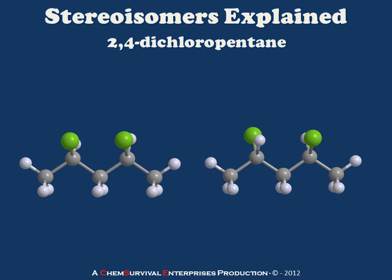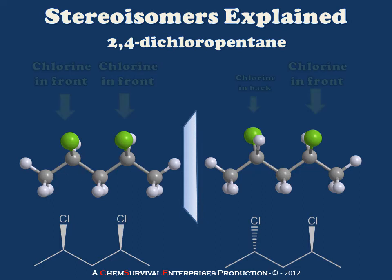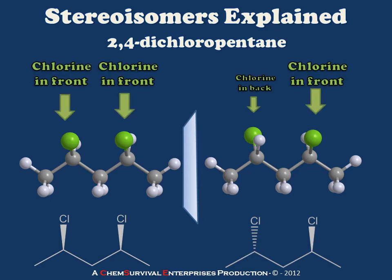Let's look at another two stereoisomers of 2,4-dichloropentane. In this case, we've changed the stereochemistry at one of the two centers. If we place a mirror between the two and look for a reflection, we're disappointed, because we have one molecule with RS stereochemistry and another with SS stereochemistry. Recall that our practical diastereomer definition tells us that if some but not all stereocenters have been inverted, we're likely looking at diastereomers. We notice that the exterior chlorines do reflect, but the interior chlorines are in alternate positions — therefore these are non-mirror images of one another.